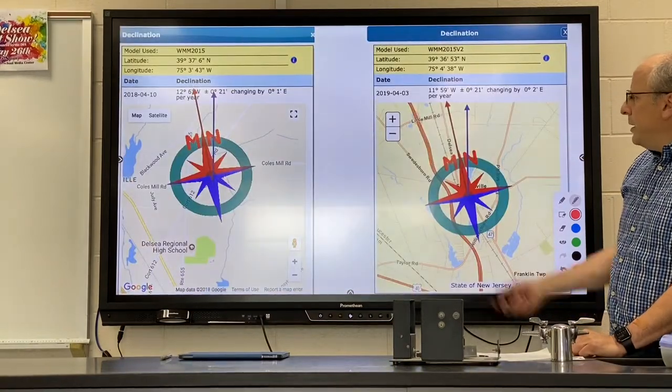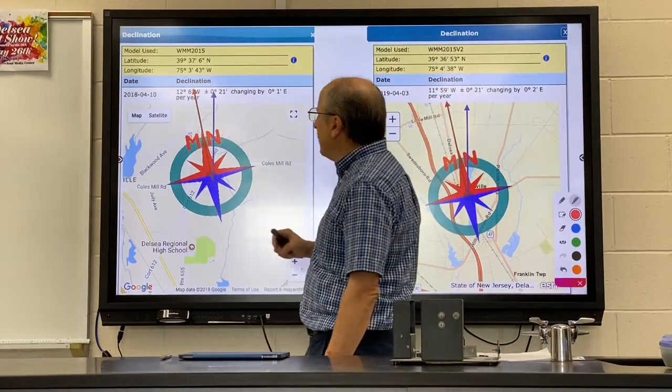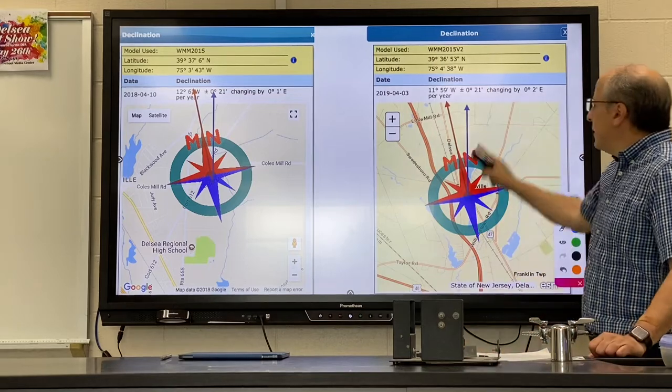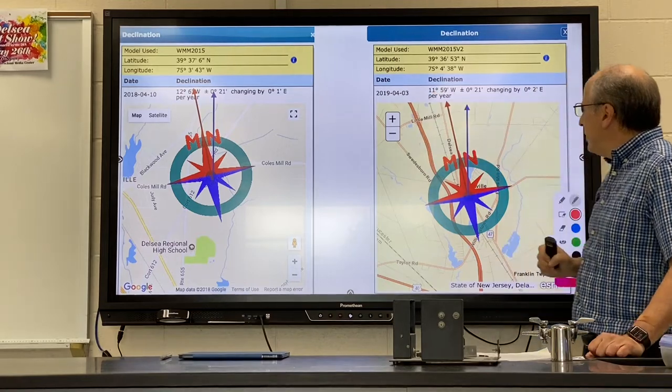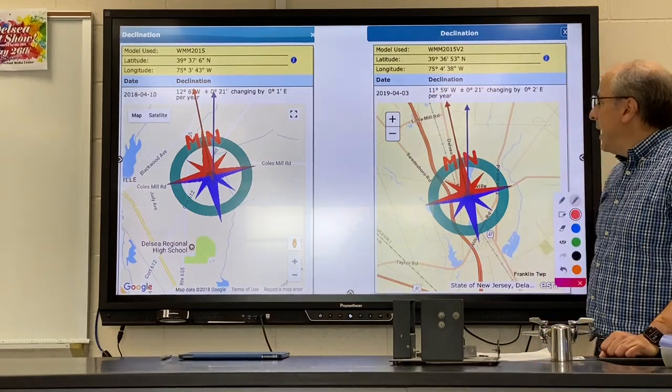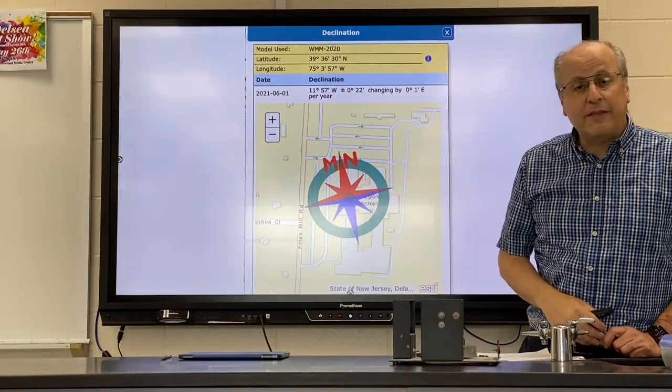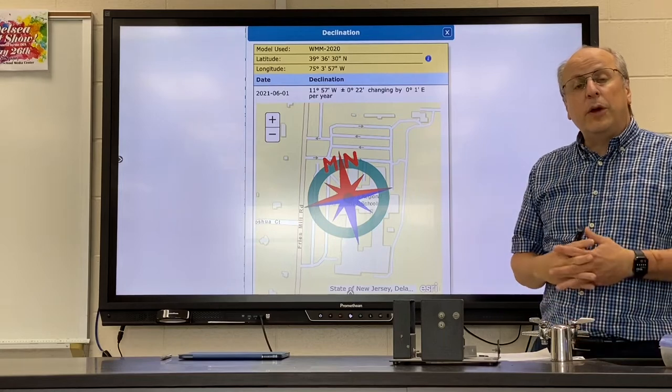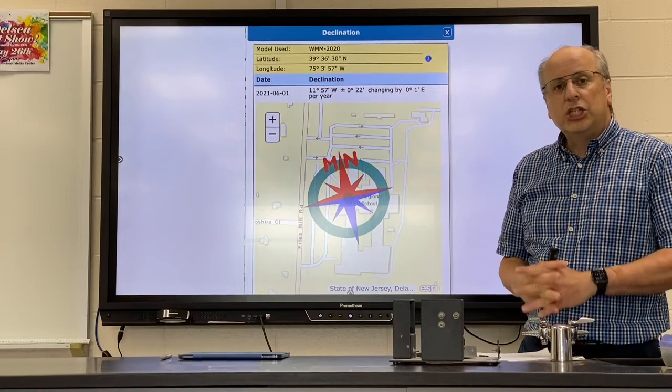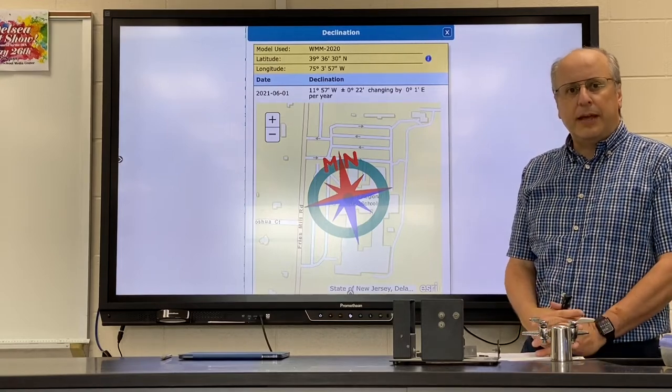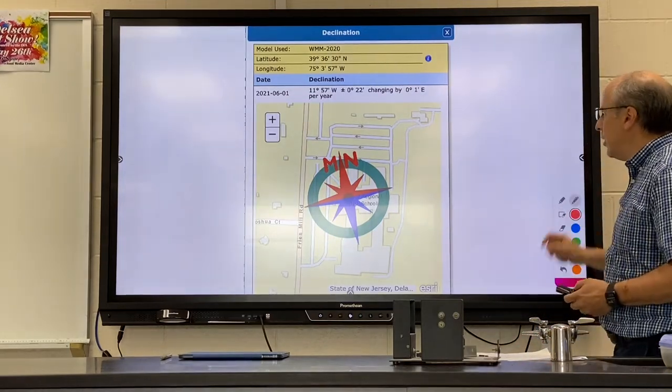I also want you to know that if you look at the declination, this was Franklinville in 2008, 12 degrees, 6 minutes. This was Franklinville in 2019, and that was 11 degrees, 59 minutes. And this is Franklinville this year in 2021, 11 degrees, 57 minutes. So what you should realize is that the magnetic pole of the Earth changes over time. You see, year to year, a slight movement in terms of where the magnetic pole is located.